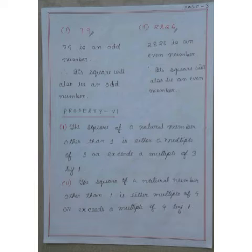Now property 6. Point 1: The square of a natural number other than 1 is either a multiple of 3 or exceeds a multiple of 3 by 1. Point 2: The square of a natural number other than 1 is either a multiple of 4 or exceeds a multiple of 4 by 1.